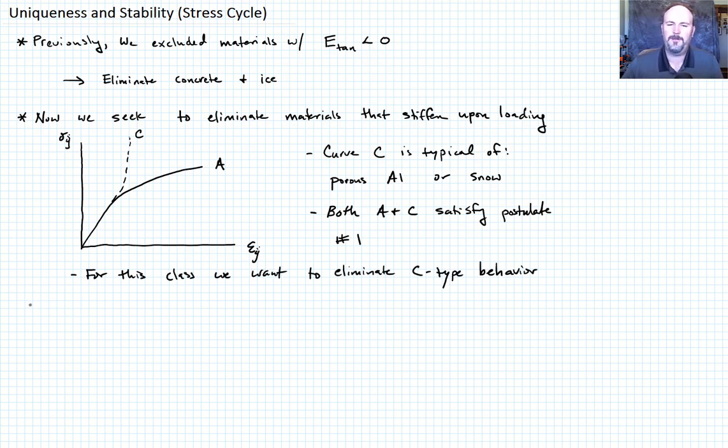But for the purposes of this class we want to eliminate the material behavior shown by C. So what we want to do to think about how we can do that is consider a stress cycle. And the stress cycle is going to go from some value sigma_a up to sigma_b and then back down to sigma_a.